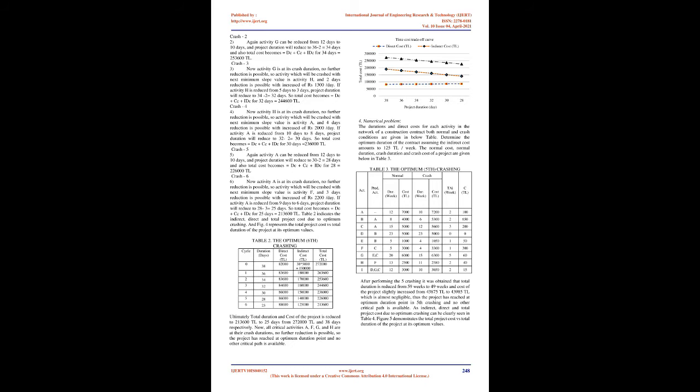Critical path: those activities with the least slack form a path through the CPM diagram from beginning to end. A sequence of project network activities which adds up to the longest overall duration is known as the critical path. Any delay of an activity on the critical path directly impacts the planned project completion date. The CPM representation of the present project is shown in FIG 2; bars with red colors are critical activities (A, F, G, H) requiring maximum resources, and bars with green colors are the remaining non-critical works. The normal cost, normal duration, crash duration, and crash cost of the project are given in Table 1. The indirect cost of the project is 5,000 rupees per day, and the optimum total cost and minimum duration are to be found.